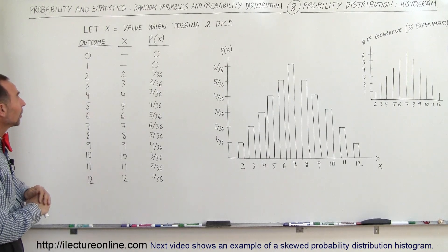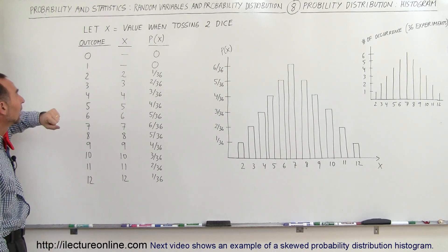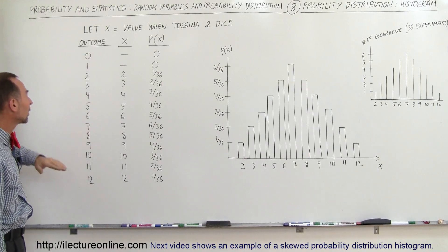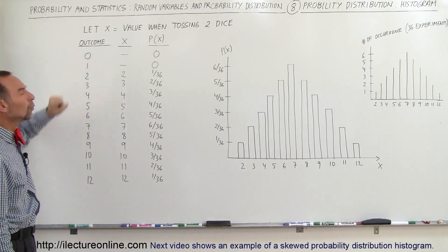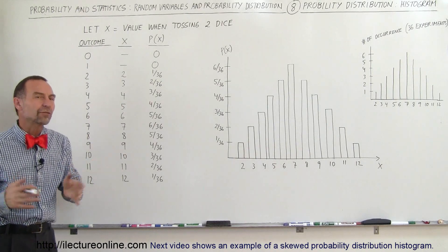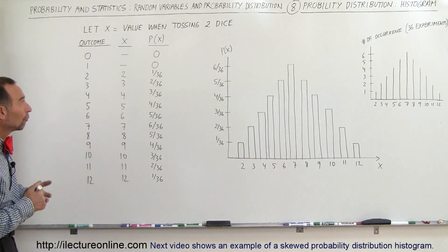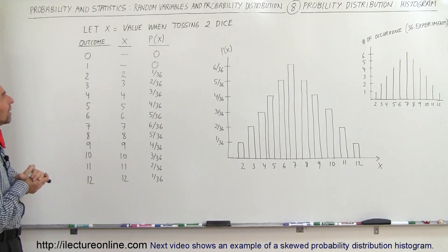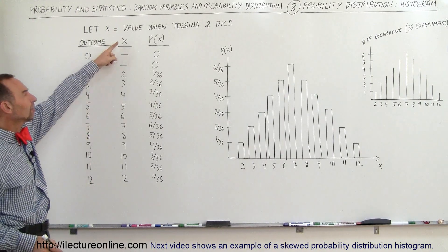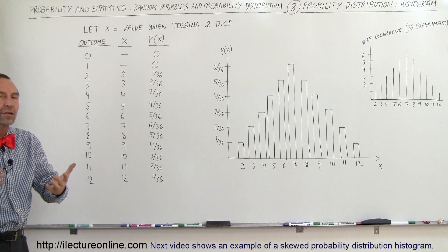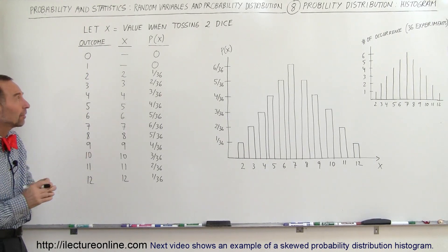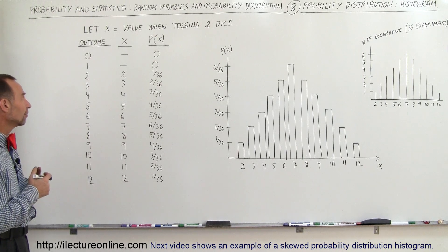So here we're going to do a different example. Let's say we toss two dice, and the outcome can either be 2, 3, 4, 5, 6, all the way up to 12. I put down 0 and 1 just to kind of see where that falls in our understanding of what we mean by what we call the random variable. So the random variable in this case is going to be X, and X is going to take on the value of the two dice that you've just tossed. So we sum the two values up together, and that will be the variable X, the random variable.